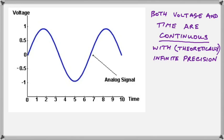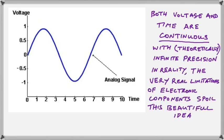Both voltage and time are continuous with theoretically infinite precision. But in reality, the very real limitations of the actual electronic components, these analog components, spoil this beautiful idea of infinite precision and there is no such animal.